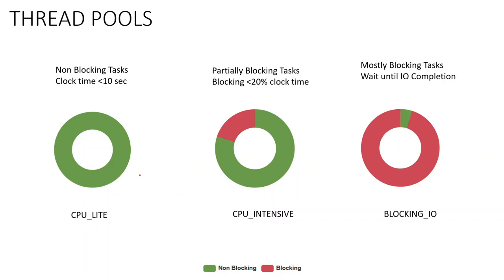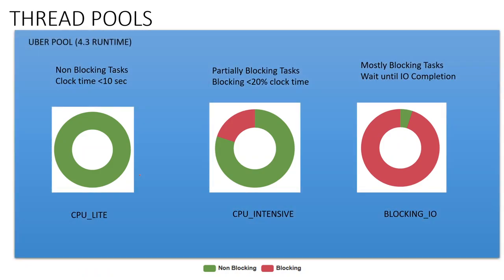As of Mule version 4.3, all three thread pools — CPU Light, CPU Intensive, and Blocking I/O — have been merged into a single uber thread pool. If you are using a runtime version less than 4.3 you will find the three separate thread pools, but from 4.3 onward you will only find the uber thread pool.